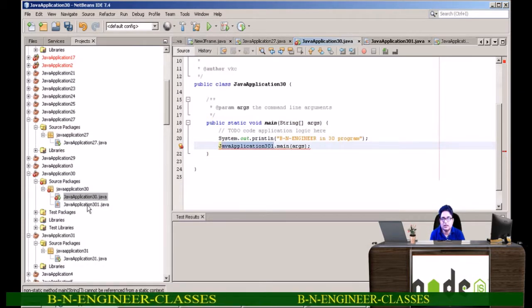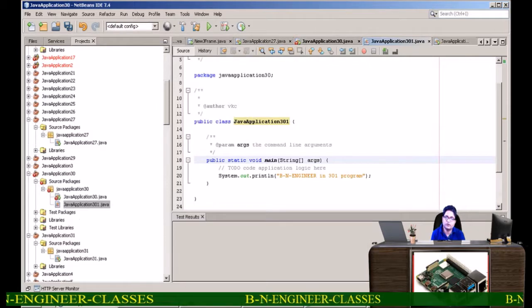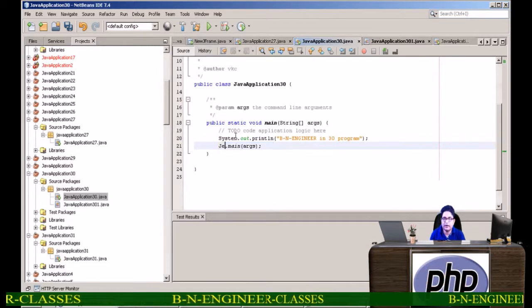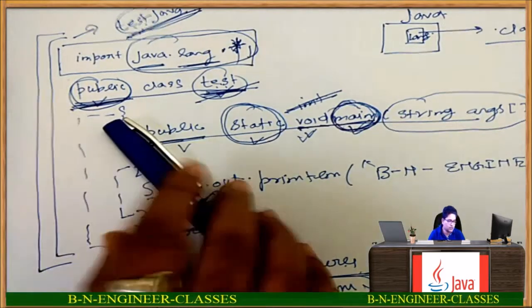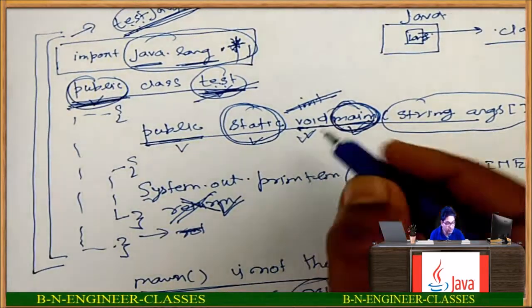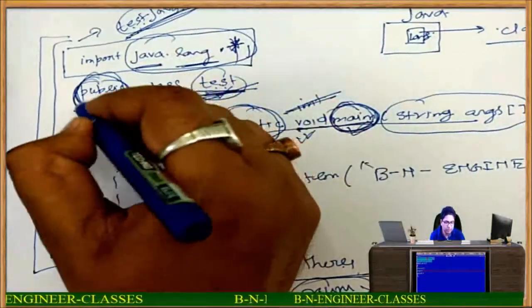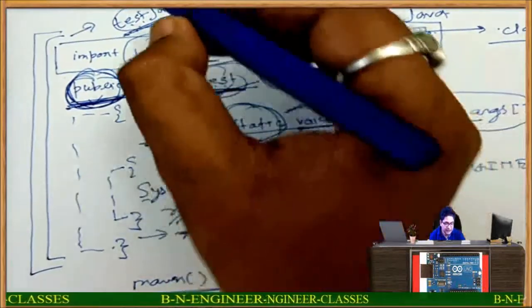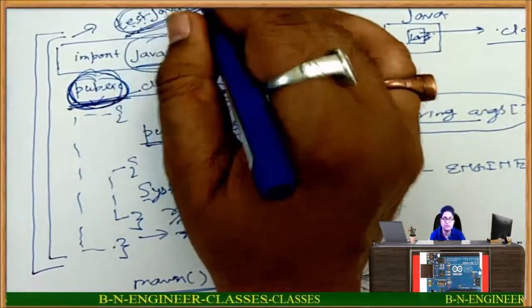How to correct it? Just go inside and write static — S-T-A-T-I-C — and now it is ok. One more thing: I told you about public. When this public is used, then necessarily the class file name and program file name must be the same.